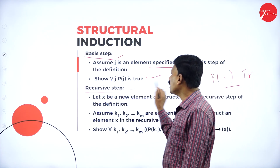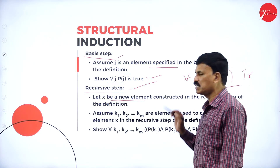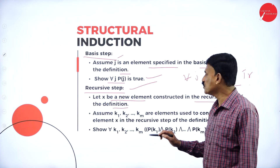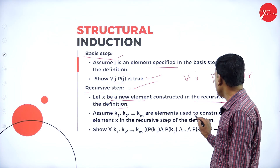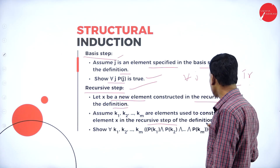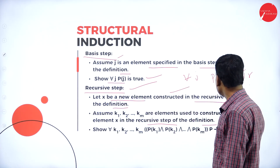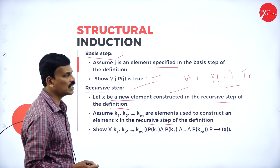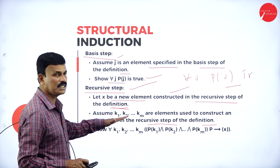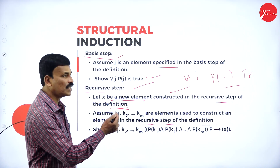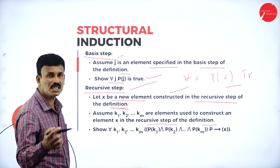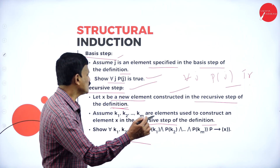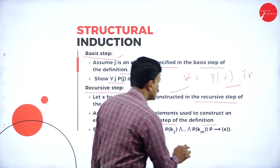The recursive step: let X be any new element constructed in the recursive step of the definition. Assume k1, k2, k3, ..., kn are elements used to construct element X in the recursive step. Then show that for all k1, k2, k3, ..., kn: P(k1) ∧ P(k2) ∧ ... ∧ P(kn) implies P(X).